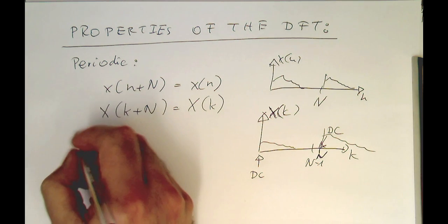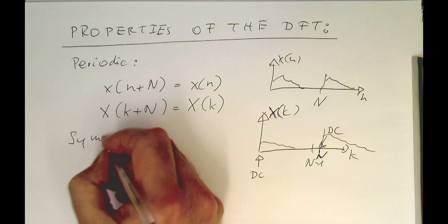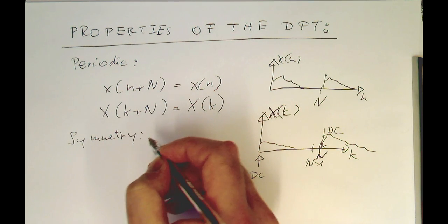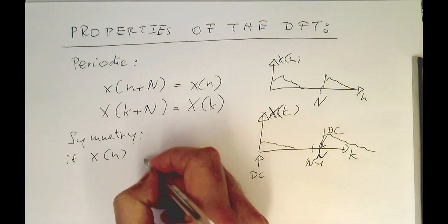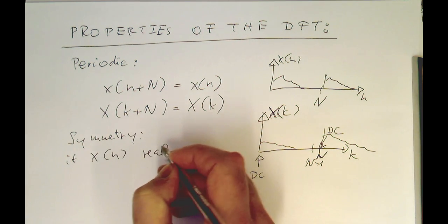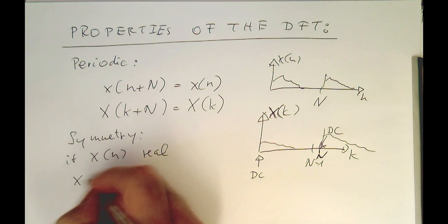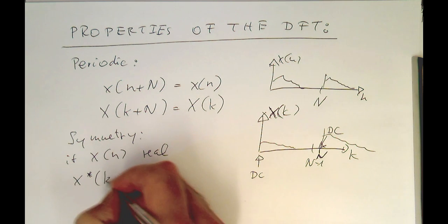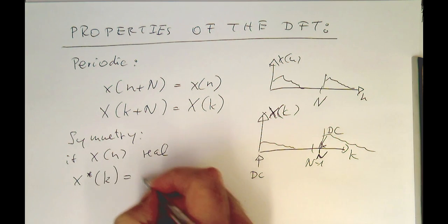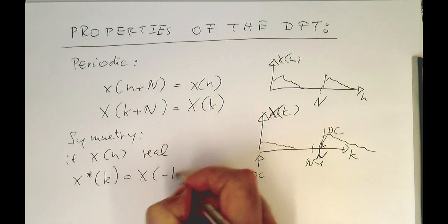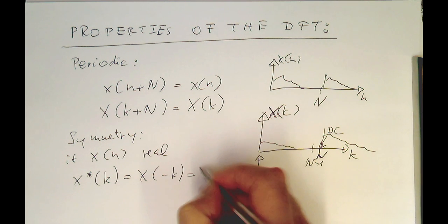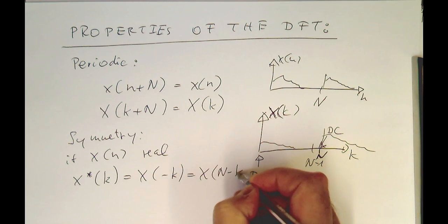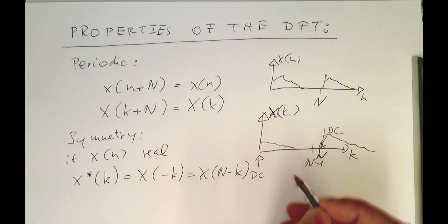Okay, so then we know we've got the symmetry property. Probably the most important one. If x of n is real, then our spectrum is complex conjugate. We've got this relationship here, minus k. Or, if we don't have any negative indices, we have capital N minus k. And we used this already before.